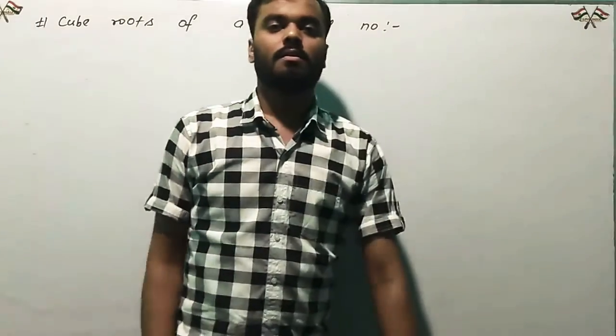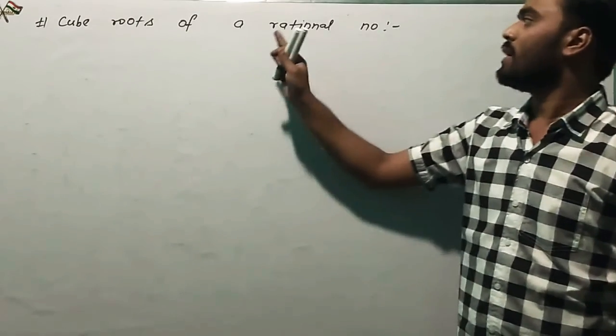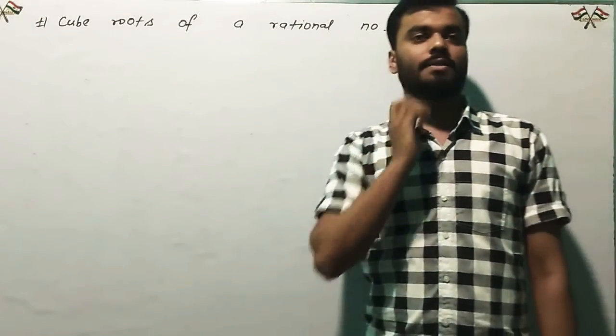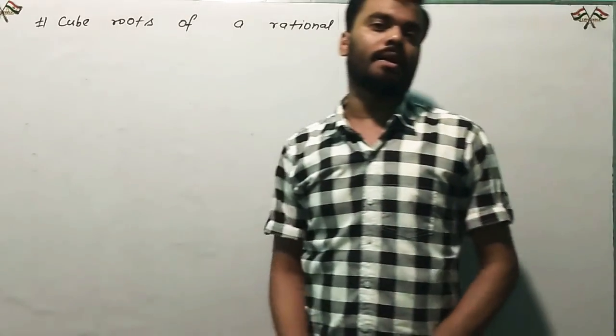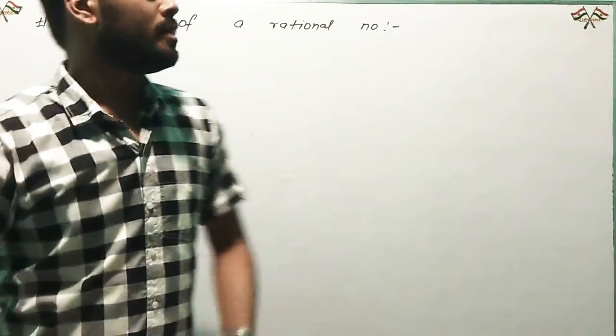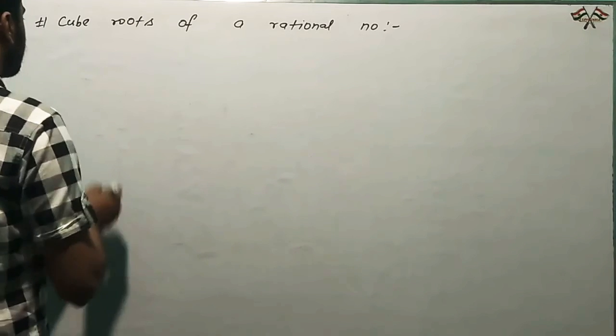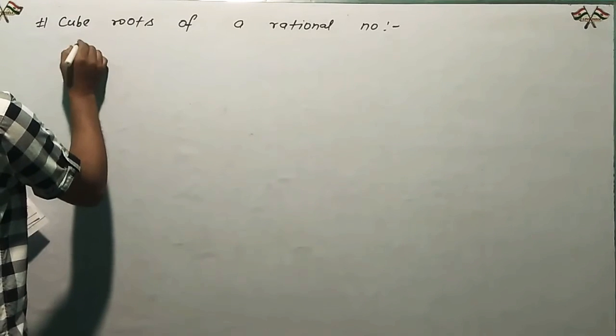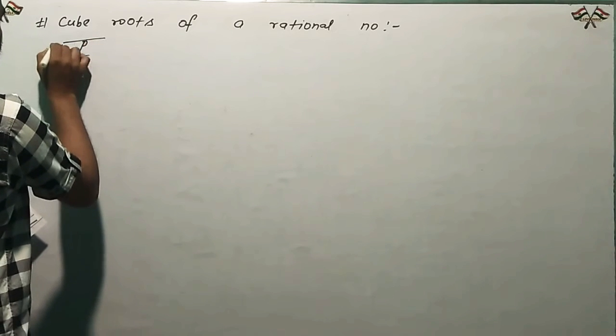Again, your next topic is cube roots of rational numbers. If a rational number is given, you need to find out its cube roots. So suppose any rational number is given as P by Q, that is your rational number, and you need to find its cube roots.